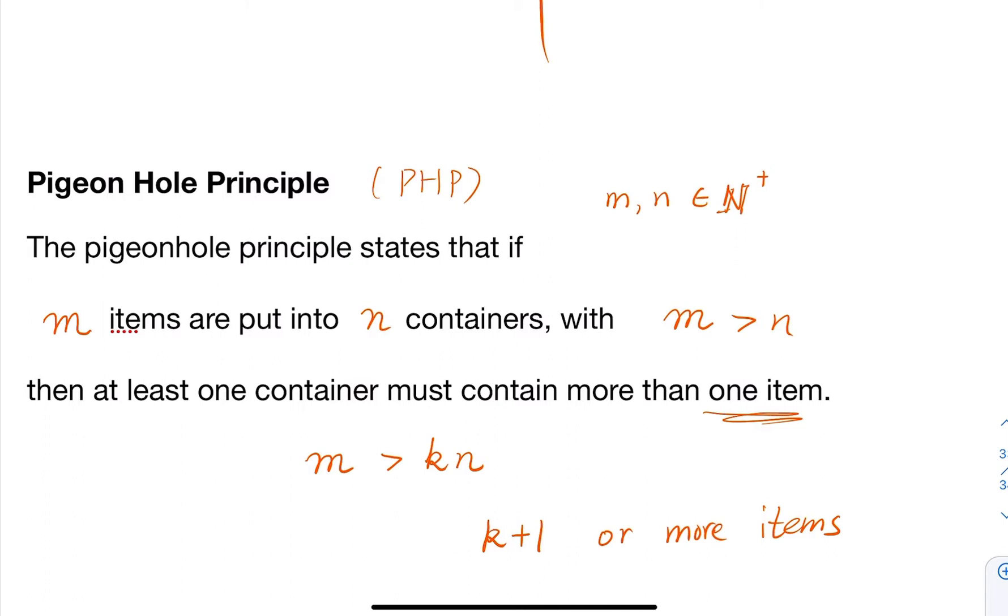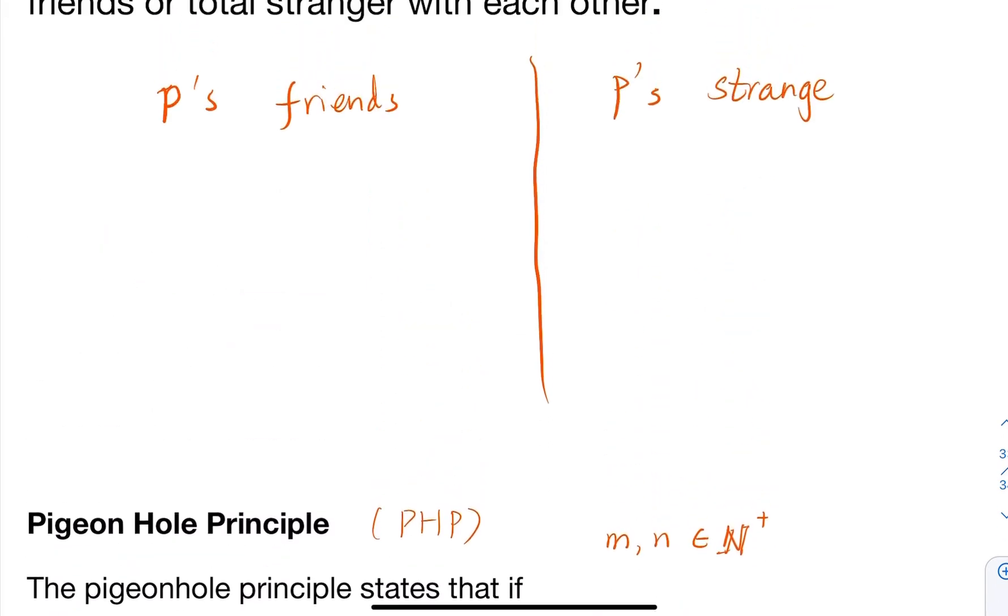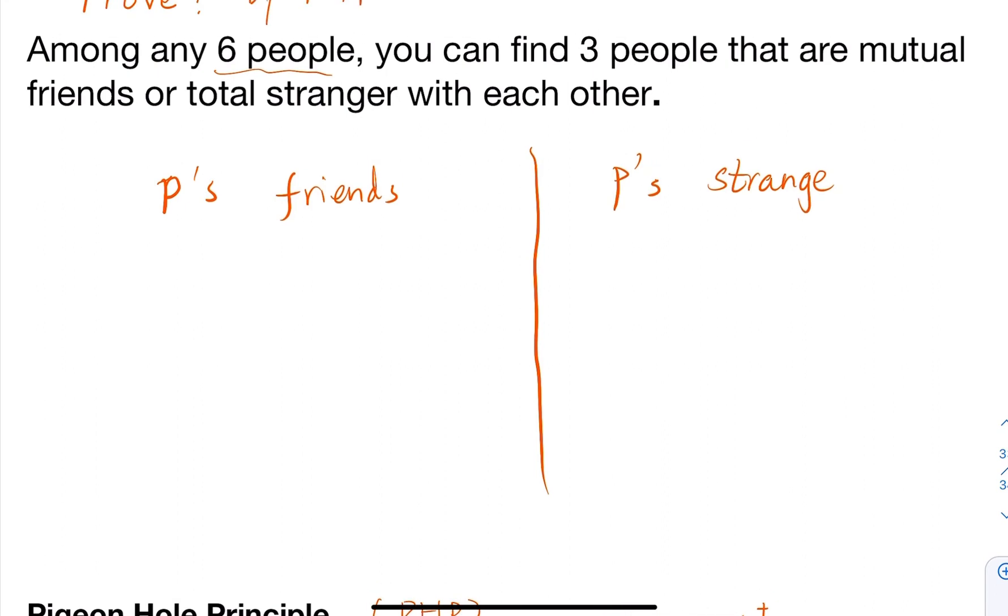But if you have more objects, m items, then at least one container must contain at least k plus one or even more. In this case, you have five people and two containers, so one must contain at least three objects. Either three people are friends or strangers with P. There are two cases.